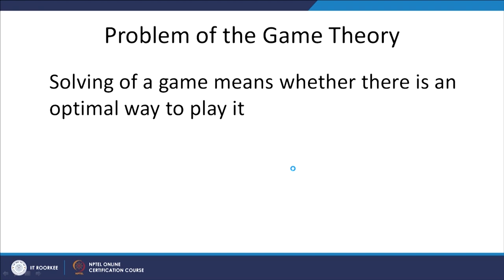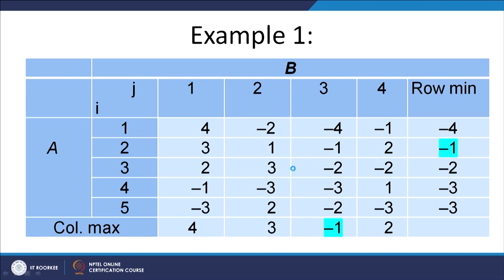Since this is a decision making problem, let us understand what the problem of game theory is. Solving a game means determining whether there is an optimal way to play the game. We take an example where players A and B each have choices: B has 4 choices and A has 5 choices, shown in the payoff matrix A_ij where some entries are positive and some are negative.